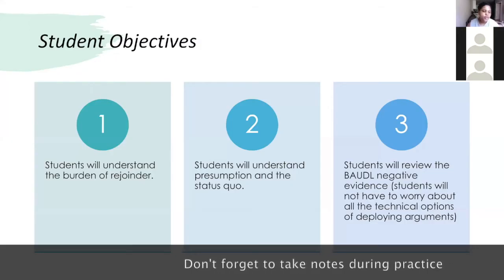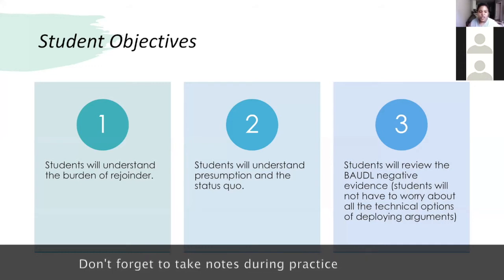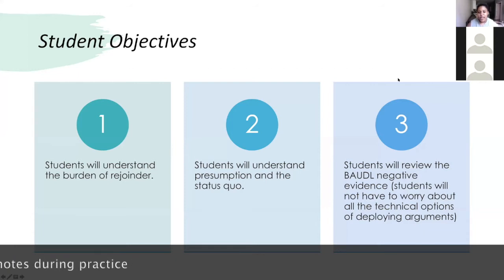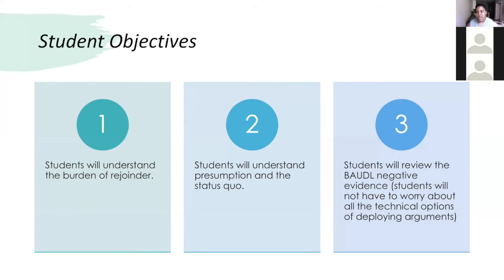Student objectives: students will understand the burden of rejoinders, students will understand presumption and the status quo, and students will review the bottle negative evidence. Students will not have to worry about all the technical options of deploying the arguments — I'm not going to give you the complete backdrop of the counter plan, the internal net benefit, and the critique all today, because that would be way too much.